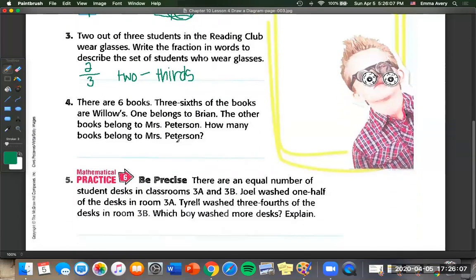Number four. There are six books. Three sixths of the books are Willows. One belongs to Brian and the other book belongs to Mrs. Peterson. How many books belong to Mrs. Peterson? So we're just going to draw a diagram like we did up there. And this one needs six pieces. So three sixths of the books are Willows. So we're going to put a W, W and a W. And one belongs to Brian. So a B. The other books belong to Mrs. Peterson. So how many are left? Well, we've got one, two. So we can say two sixths of the books.